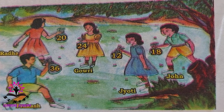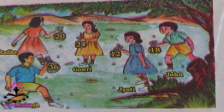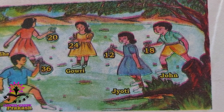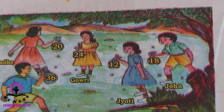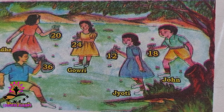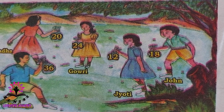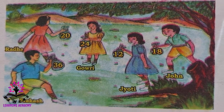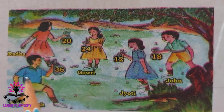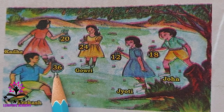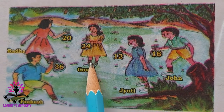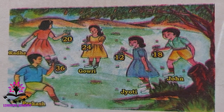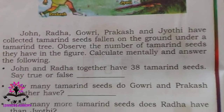John, Radha, Gauri, Prakash and Jyoti have collected tamarind seeds fallen on the ground under a tamarind tree. Observe the numbers of tamarind seeds they have in the figure and calculate mentally to answer the following. Prakash has 36 seeds, Radha has 20, Gauri has 24, Jyoti has 12 and John has 18 tamarind seeds.